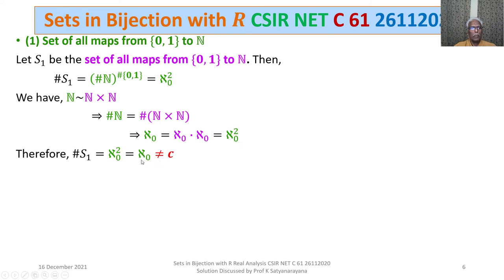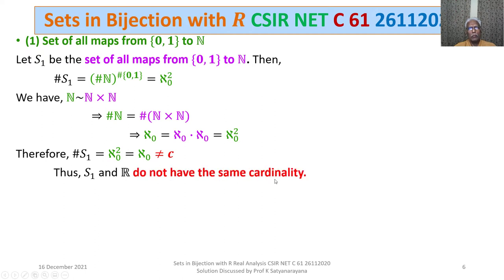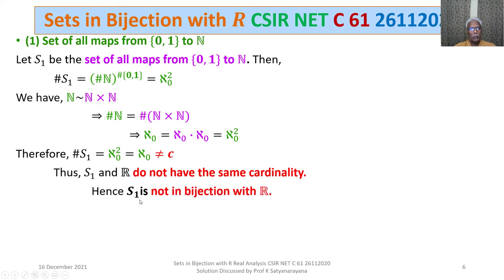Since ℵ₀ < C, S1 and R do not have the same cardinality — S1 has cardinality ℵ₀ and R has cardinality C. Therefore, S1 is not in bijection with R, and Option 1 is not true.